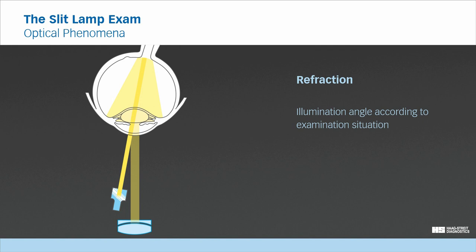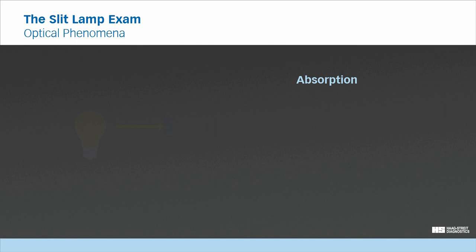To create refraction, an indirect light source is required. Structures such as the iris, the lens or the retina can be used to provide reflected light. The illumination angle depends on how the reflecting structure is to be illuminated in order to create the desired refraction phenomena.